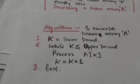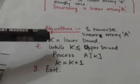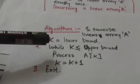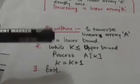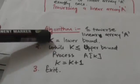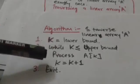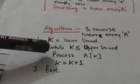This is the algorithm to traverse a linear array A. First, the lower bound of array A is assigned to a variable K, then while K is less than or equal to upper bound.